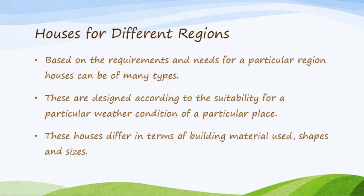Now, children, houses for different regions. Based on the requirements and needs of a particular region, houses can be of many types. For example, if a place is very cold, igloos are used there — they are warm from inside but made up of ice. These houses are designed according to the suitability for a particular weather condition. These houses differ in terms of building material used, shapes and sizes.